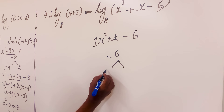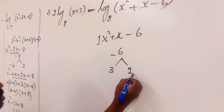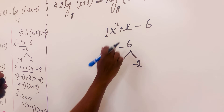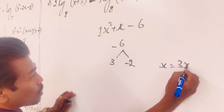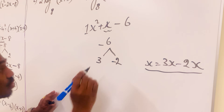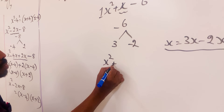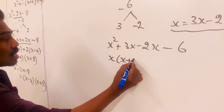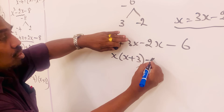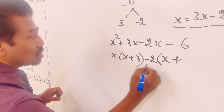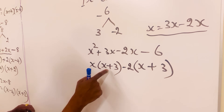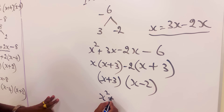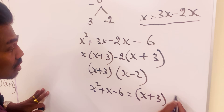What are the suitable numbers? 3 times negative 2 equals negative 6, and 3 plus negative 2 equals 1. So x can be written as 3x minus 2x, making it x squared plus 3x minus 2x minus 6. Taking x outside the first two terms gives x(x plus 3). Taking negative 2 outside the last two terms gives negative 2(x plus 3). So x squared plus x minus 6 equals x plus 3 times x minus 2.